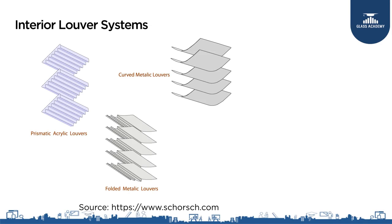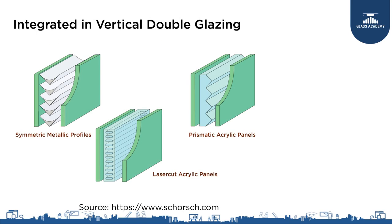We can also redirect the light using interior louver systems. These can be prismatic acrylic louvers, curved metallic louvers, or folded metallic louvers. The basic idea is the same — some angles we might allow to come straight inside, some angles we would like reflected towards the ceiling, and some angles we might even reject and reflect back outside. We can also have these louvers integrated into the panels — so we can have two glass panels with louvers between them. Why integrate them between double glazing? Because they are easy to maintain, not exposed to pollution and dust, and the reflectivity of the material can be easily maintained. The purpose is the same: they have to reflect the solar radiation towards the ceiling.